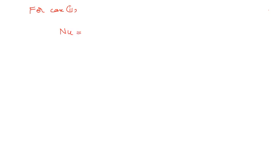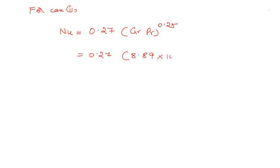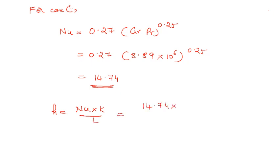For Case 2, when heated from the bottom side, the other quantities remain the same but the Nusselt number correlation changes to Nu = 0.27 × (Gr·Pr)^0.25 = 0.27 × (8.89 × 10⁶)^0.25 = 14.74. So h = Nu × k / L = 14.74 × 0.02896 / 0.125 = 3.414 W/m²·K.